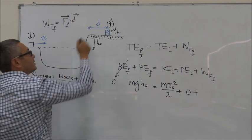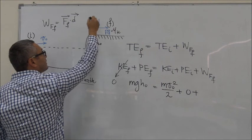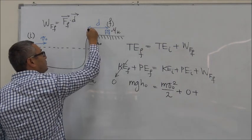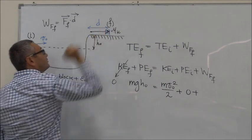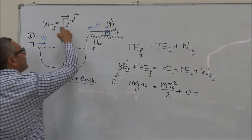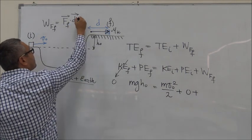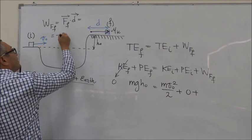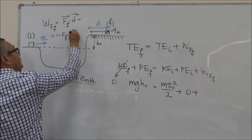And remember, the displacement vector, well, this is D as a distance, but the displacement vector will be from here to here. These two vectors are opposite, so this is equal to minus FFD.